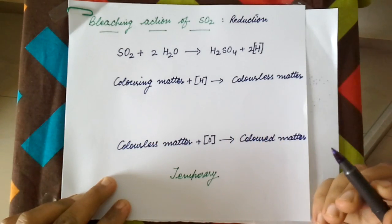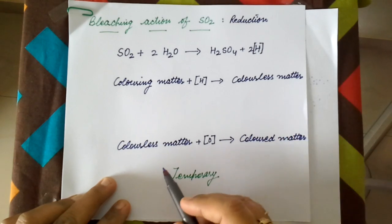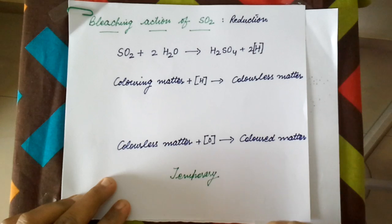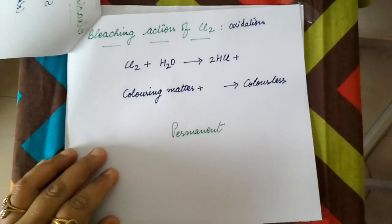But over time, this colorless matter is oxidized to colored matter in the presence of atmospheric oxygen. That is why the bleaching action of sulfur dioxide is temporary. The bleaching action of chlorine takes place by oxidation.